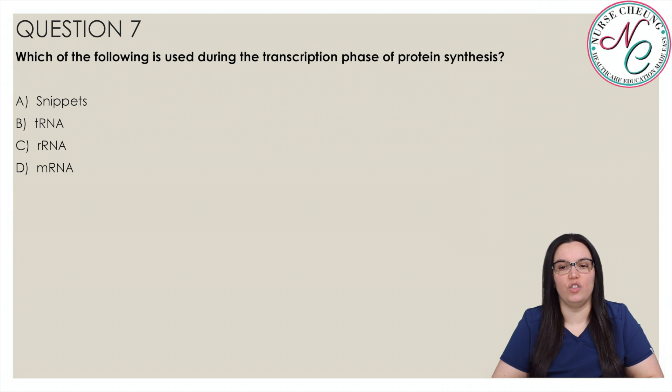Which of the following is used during the transcription phase of protein synthesis? Is it A: Snippets, B: tRNA, C: rRNA, or D: mRNA? And the correct answer is D, mRNA.